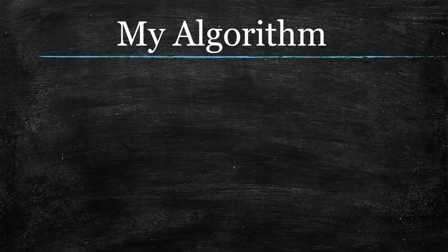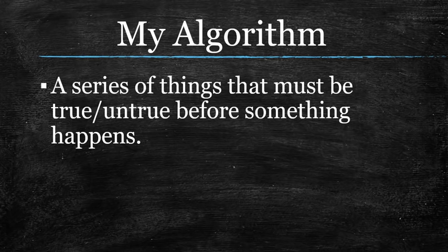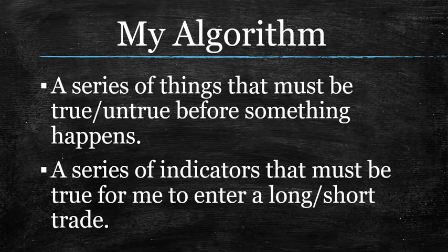Let's quickly go over what an algorithm is, because I want all of you over time to have one for yourself. It's not mathy — it has nothing to do with algebra. It's just a series of things, by definition, that must be true or untrue before something actually happens. In a trading sense, for me, it's a series of indicators that must all agree with each other — every single one must say: on this currency pair, it is time to go long or go short. If even one is indecisive or tells me the other way, I do nothing.